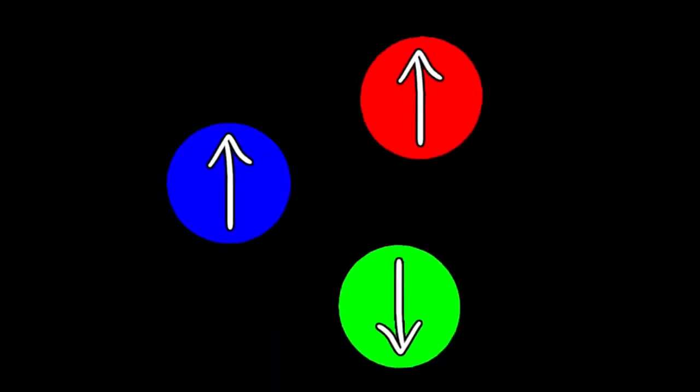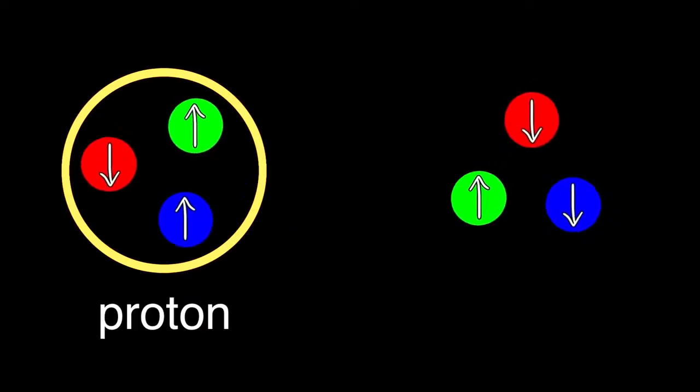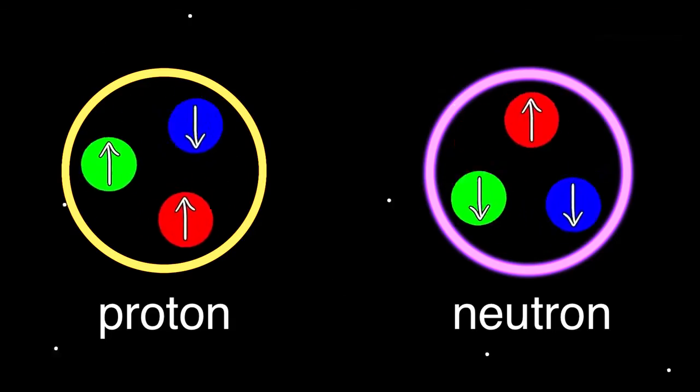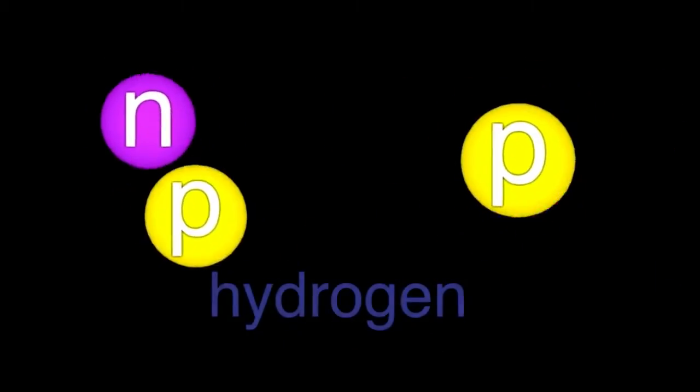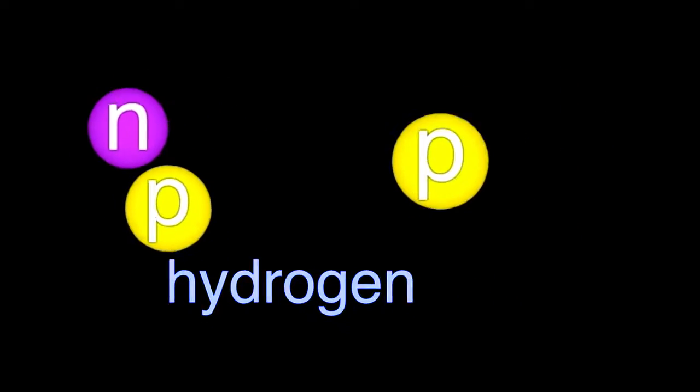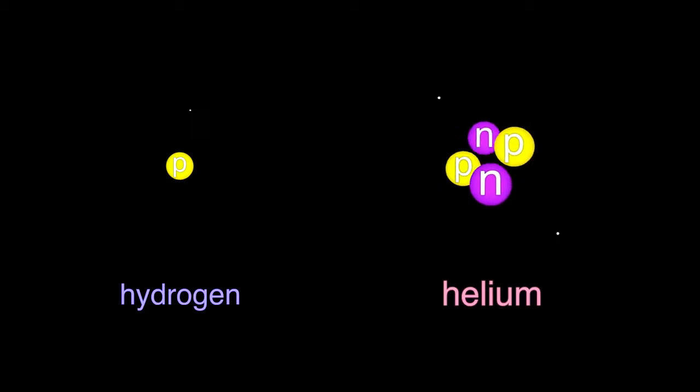Great news. The quarks are now happily married in groups of three, called a proton or a neutron. And there's something else flying around too that wants to join in but can't because it's still too hot. Great news. The protons and neutrons are now happily married to each other. Some of them even doubled up. Great news. The electrons have now joined in. Congratulations. The world is now a bunch of gas in space.